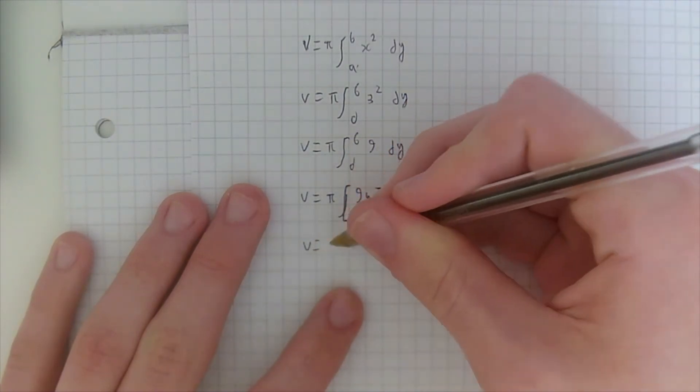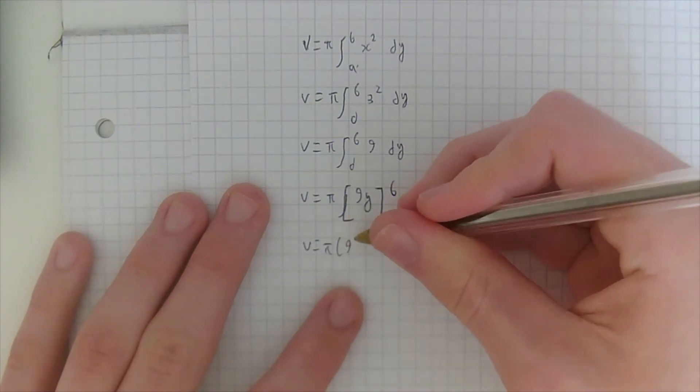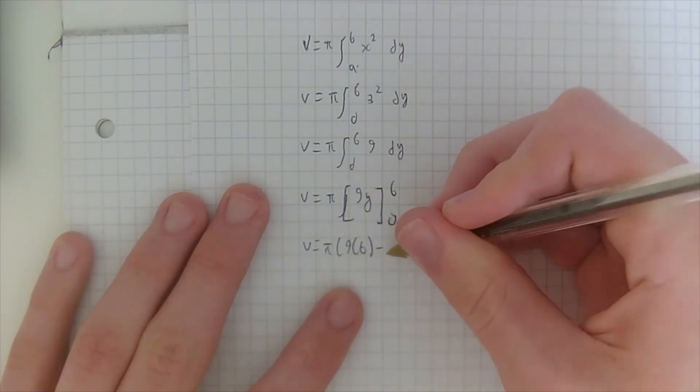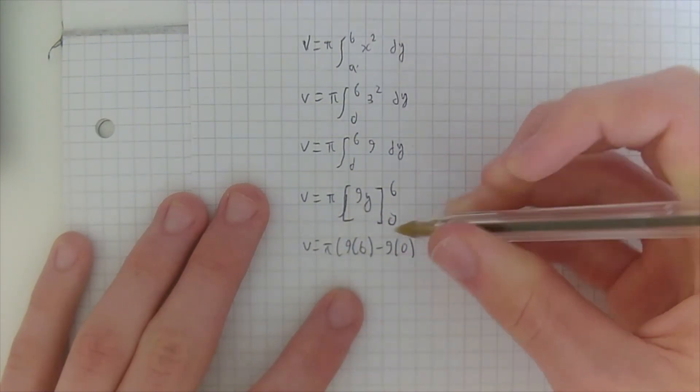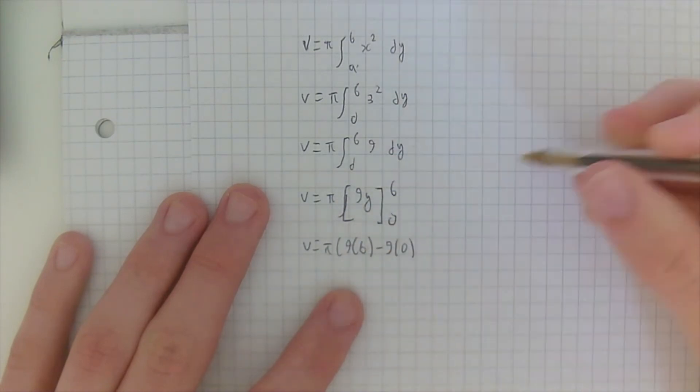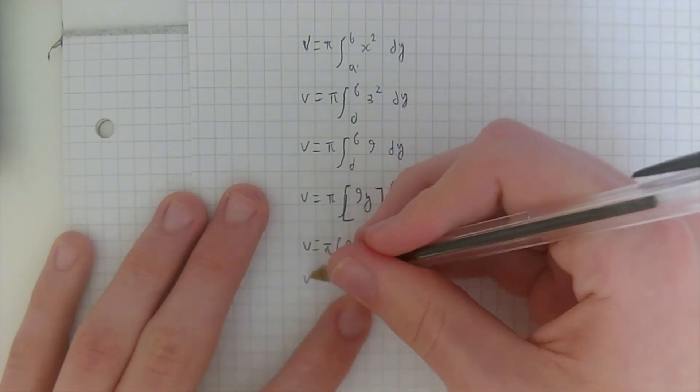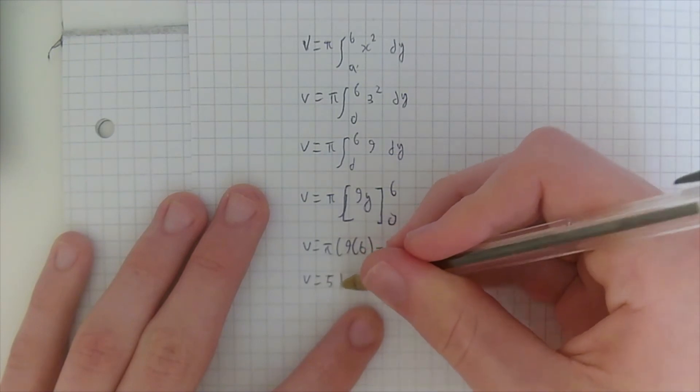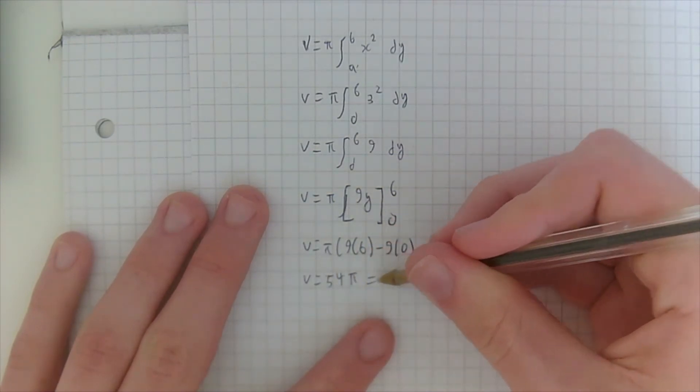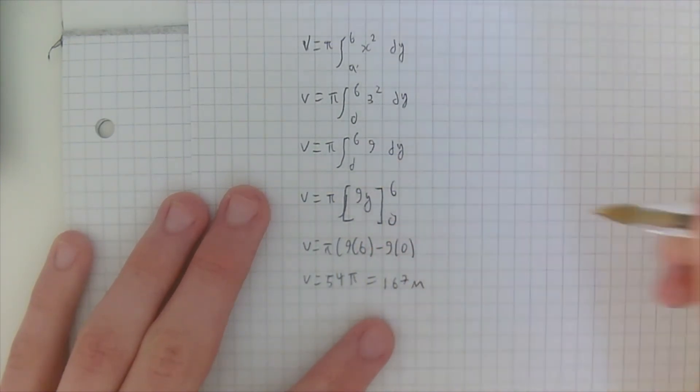We find that volume... Volume here, now of course 9 times 6 is 54, so volume equals 54 pi, or 167 meters.